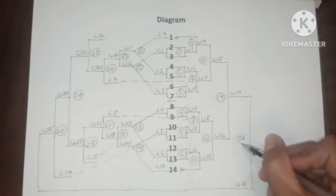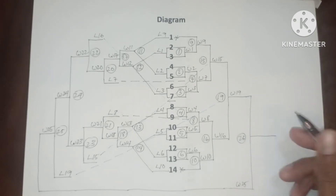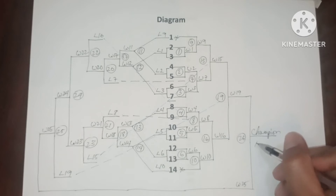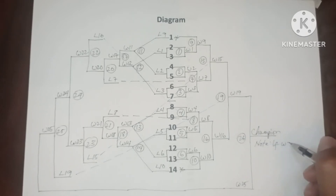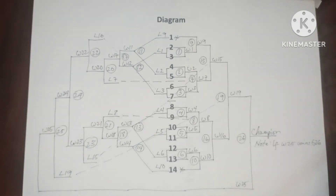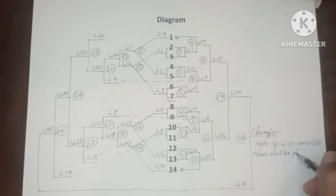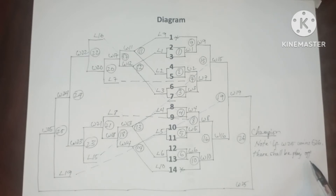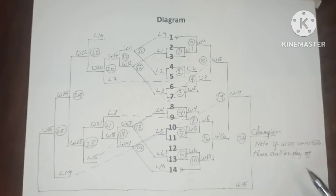In game 26. Note: if winner 25 wins game 26, there shall be a playoff or another game to break the tie. Now let's proceed to game scheduling.